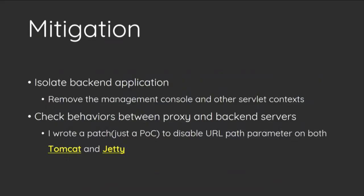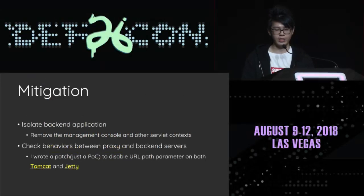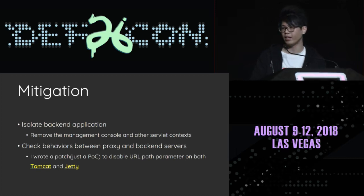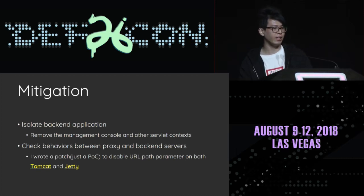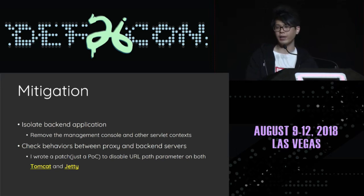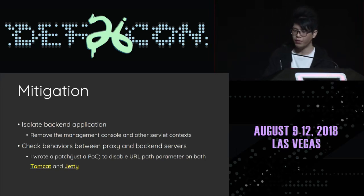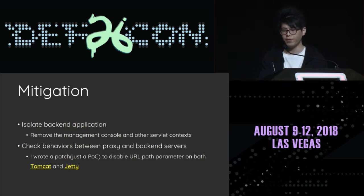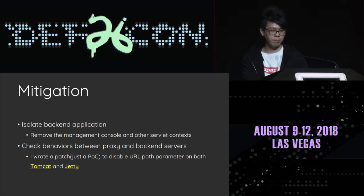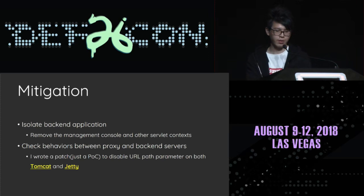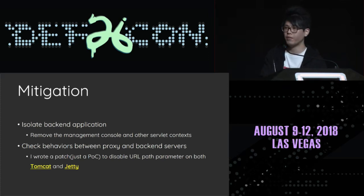So how to prevent this type of attack? This is hard to fix because URL path parameters are a normal feature and not a bug on either side. According to my experience in bug reporting, most vendors cannot patch the bug completely the first time — their patch is bypassable. So we mitigate from two aspects: one is to isolate your backend application, remote management interfaces, and other contexts from your Java container. The second is to ensure consistent behavior between the proxy and backend servers. But it seems there is no directive to disable the feature, so I wrote a patch for that — you can check the hyperlink after this talk.